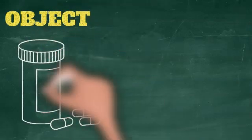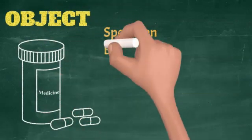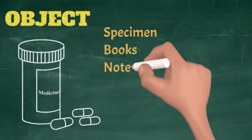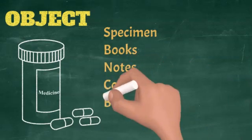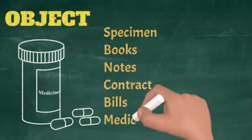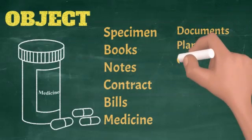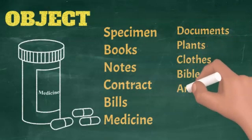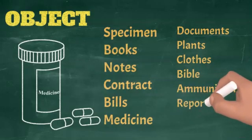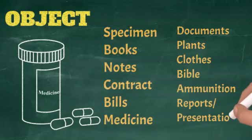For objects, you can choose specimen, books, notes, contract, bills, medicine, documents, plans, clothes, Bible, ammunition, reports, or presentation.